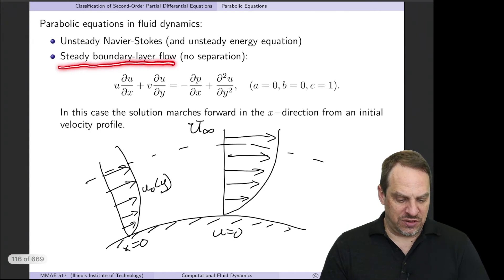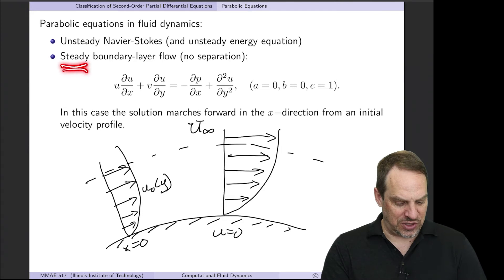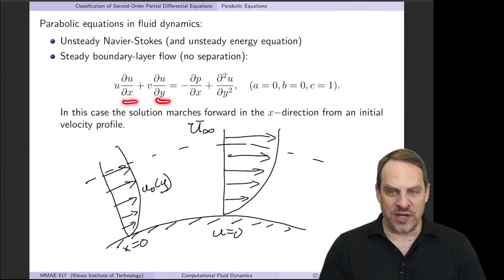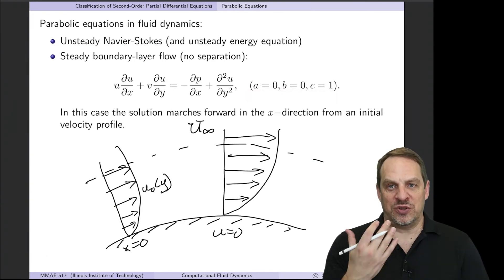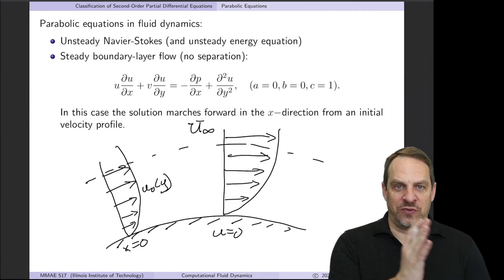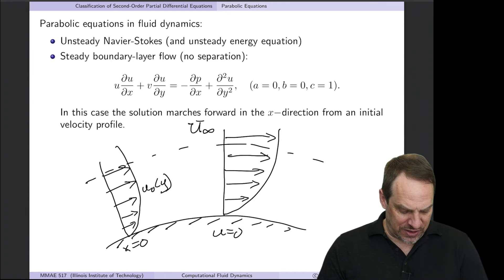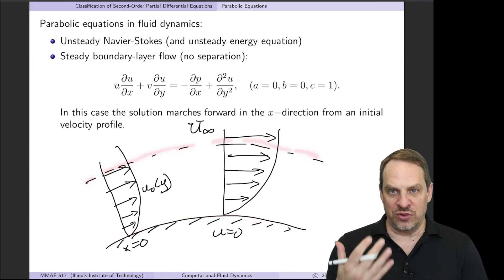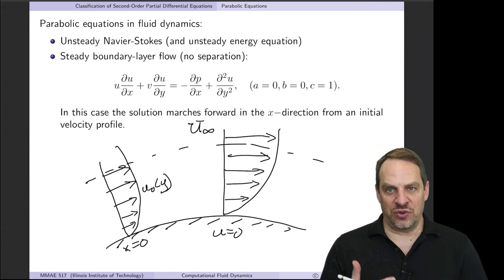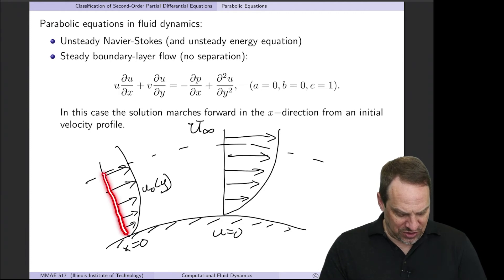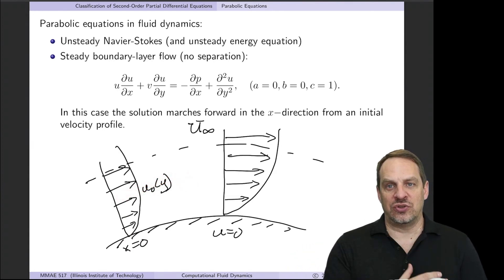The steady boundary layer equations are also parabolic, even though they're steady. Now x and y are the independent variables. Because a = 0, b = 0, and c = 1, this is a parabolic equation forward in x rather than forward in time. The boundary layer is a thin layer of fluid along a boundary with characteristic velocity profiles showing the no-slip condition, and we would have an initial condition at x = 0 that evolves forward in x.